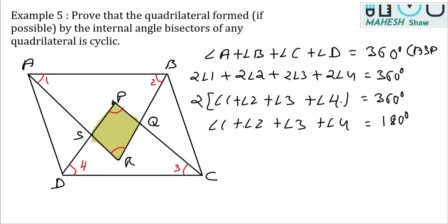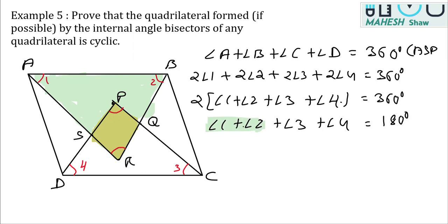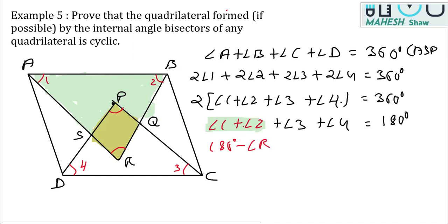Now consider triangle ABC. The sum of its three angles is 180 degrees. So angle 1 + angle 2 + angle R = 180°, which means I can replace angle 1 + angle 2 with (180° − angle R).